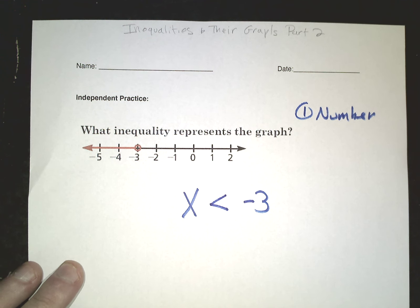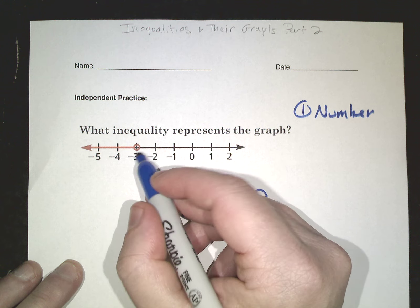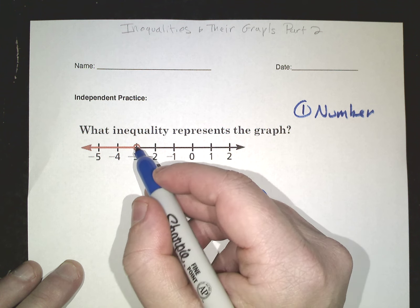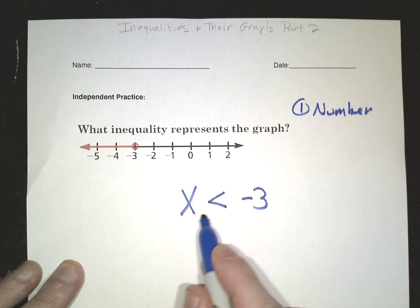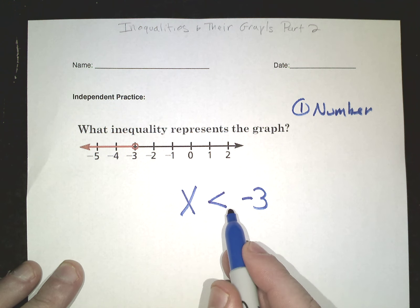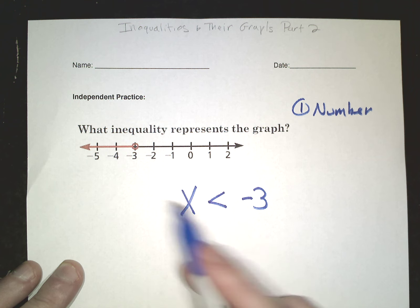Now the next question is, is it equal to or not? Well, you can see here that you can see through this circle, which means it's not equal to. So I don't put a bar underneath here. If I did, I would draw a little bar underneath here, but it was filled in, but it's not.